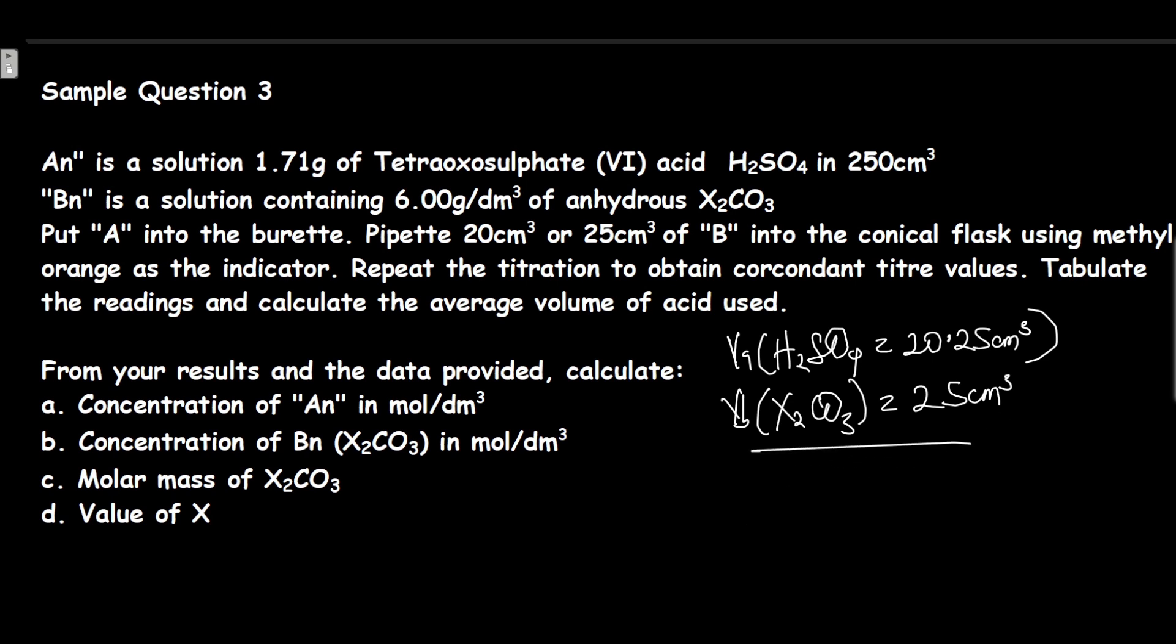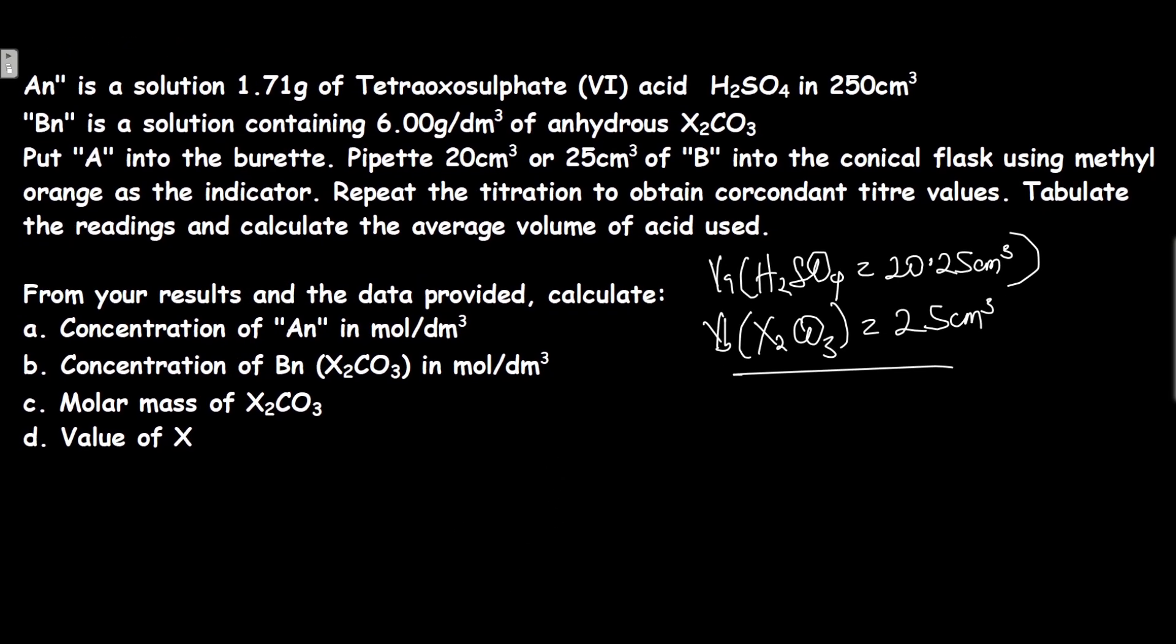Now let's go back to the question. It says calculate the concentration of AN in mol/dm³. From the question, AN contains 1.71 grams of sulfuric acid in 250 cm³.